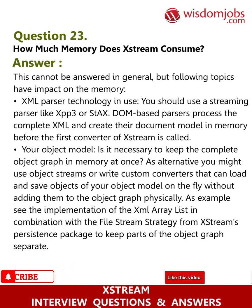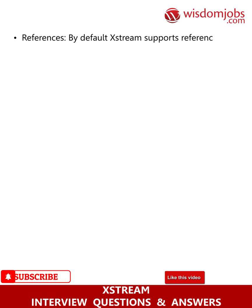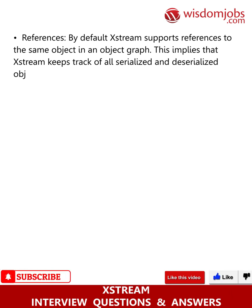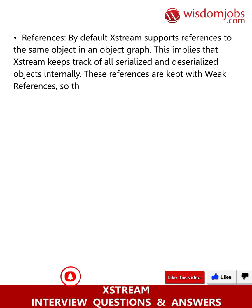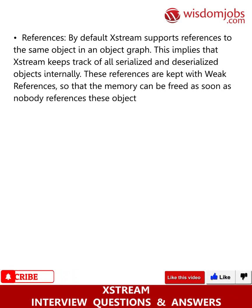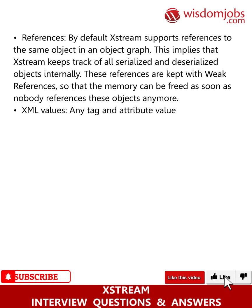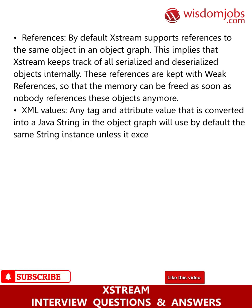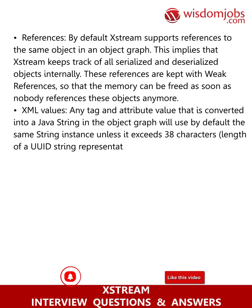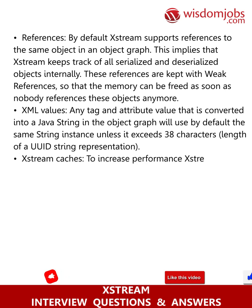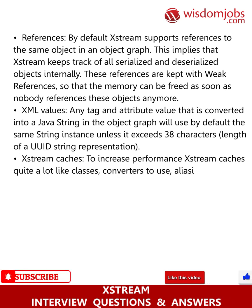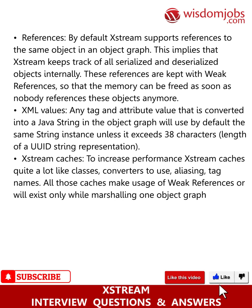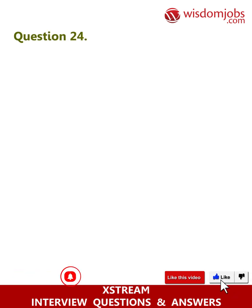To keep parts of the object graph separate, references: by default XStream supports references to the same object in an object graph, which implies it keeps track of all serialized and deserialized objects internally using weak references so that memory can be freed as soon as nobody references those objects anymore. XML values: any tag and attribute value converted into a Java String will by default use the same String instance unless it exceeds 38 characters. XStream caches quite a lot — like classes, converters, and tag names — all using weak references or existing only while marshalling one object graph or unmarshalling one input stream.